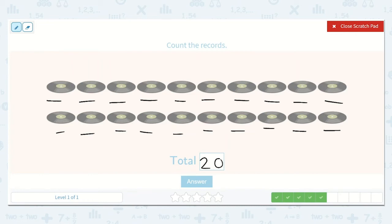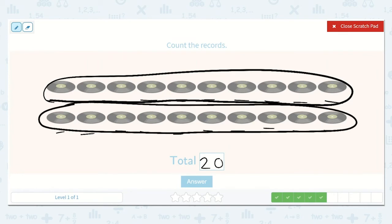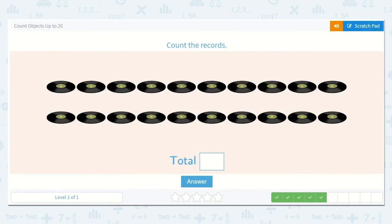And I know that answer is reasonable because we knew there were 10 in this group and 10 in this group. Great. So if we were to count by 10s, 10, 20, 20 is the answer. 20 is a 2 and a 0.